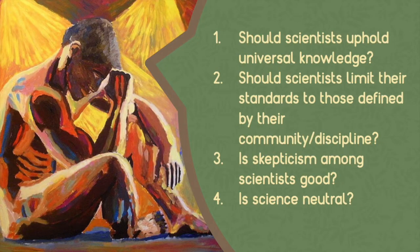Appealing to philosophical ethics, we ask: should scientists uphold universal knowledge all the time? Is there a potential problem when we allow scientists and the scientific community to dominate knowledge generation and declare universal truth? One potential problem is that it invalidates indigenous knowledge, and when we invalidate indigenous knowledge, there is a lot of cultural knowledge that is lost along the way.